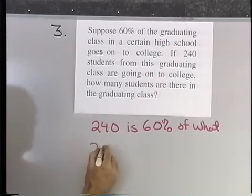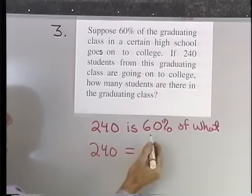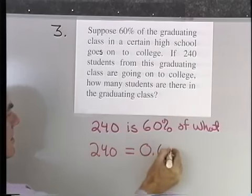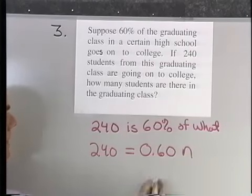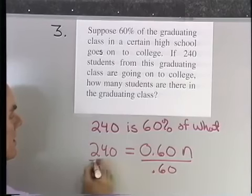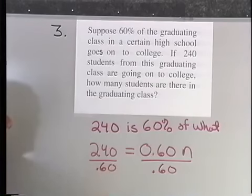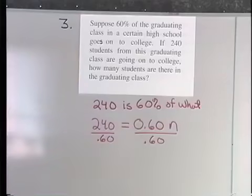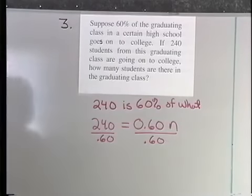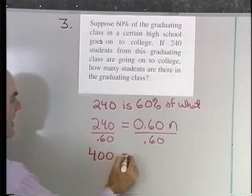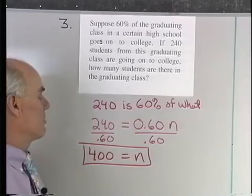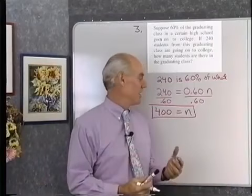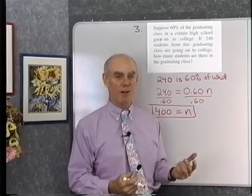So I translate this: 240 equals 60 percent — 0.60 — times N. Dividing both sides by 0.6, I get 240 divided by 0.6, which comes out to 400. So N equals 400. There must be 400 students graduating if 240 of them go on to college and 240 is 60 percent of the graduating class.